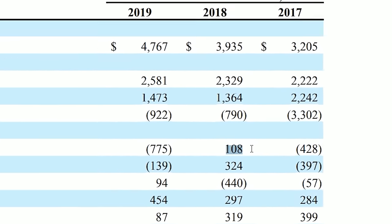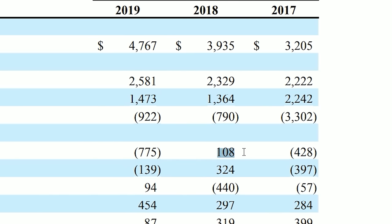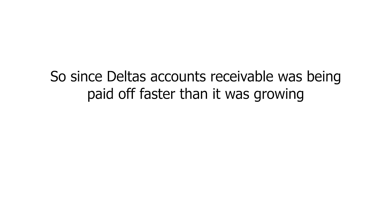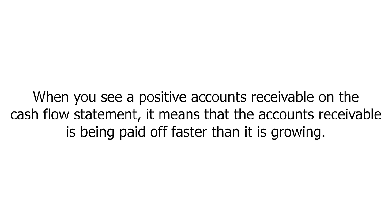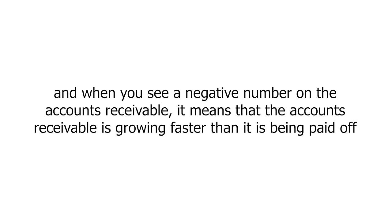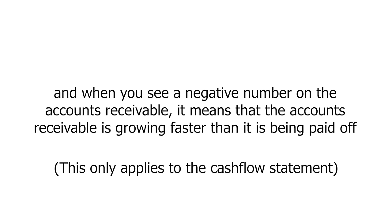When you see a positive accounts receivable on the cash flow statement, it means accounts receivable are being paid off faster than they are growing. When you see a negative number, it means accounts receivable is growing faster than being paid off. Moving on to inventory — Delta spent $139 million on inventory, specifically jet fuel added to their current inventory. Since Delta spent this money, it is reported as a negative number because money is flowing out of the business.